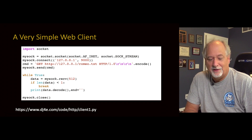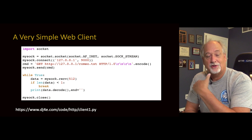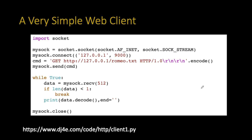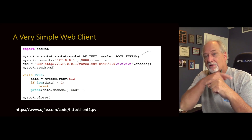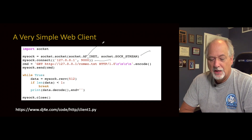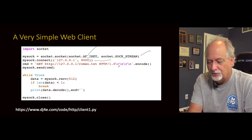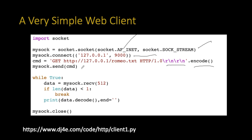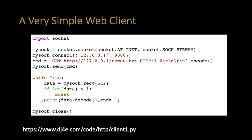Now we're going to build a simple web client that talks to our server. The other web client we made talked to data.pr4e.org; this one is going to talk to yourself. It almost looks identical. We make a socket, we connect to localhost — 127.0.0.1 is the IPv4 loopback address — on port 9000, where our web server is running. We send a valid GET request with HTTP 1.0 and two newlines, encode it to UTF-8 before sending. We loop and print it all out, and when the socket closes we break and close our end.